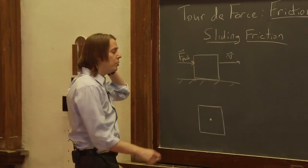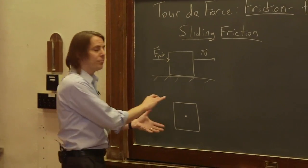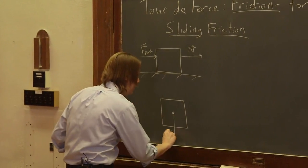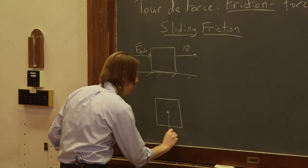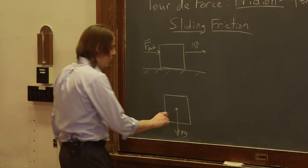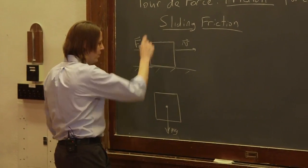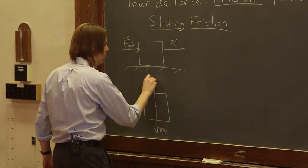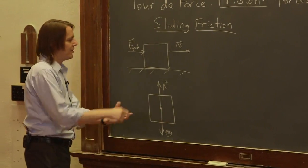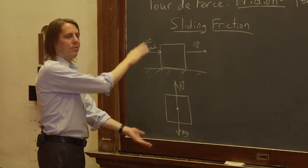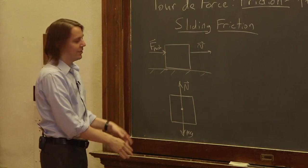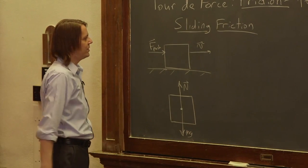When you do a free body diagram, you've got to get all of the forces. So one force is mg — the force of gravity pulling it down. We know the table applies a normal force. And since it's not accelerating in the y direction, we know that those two must be equal and opposite — they're canceling each other out.